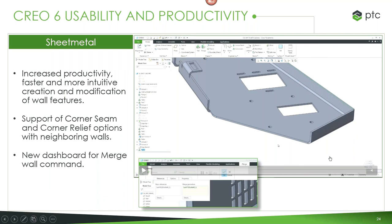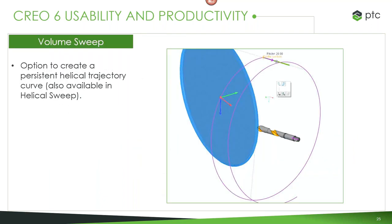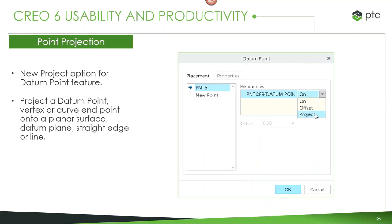There's also a new dashboard for merging walls within Creo 6. Something added in Creo 5 was the helical trajectory curve, and we now have the option to create a persistent trajectory for these helical sweeps. If you want to use this for manufacturing downstream or to drive another feature, this persistent trajectory can be pulled out of the actual part instead of being locked inside the helical sweep or volume sweep itself.